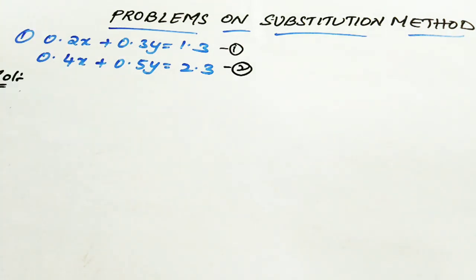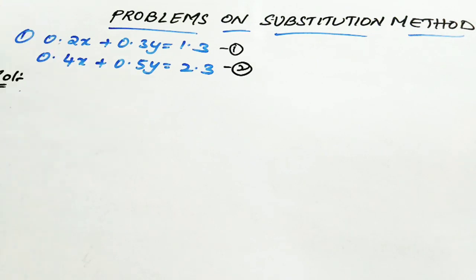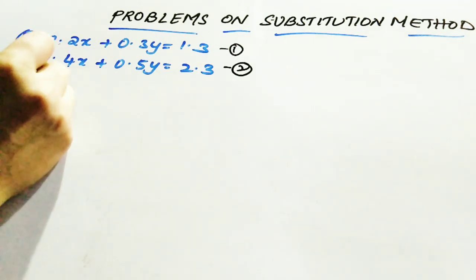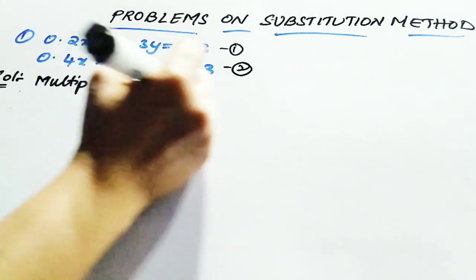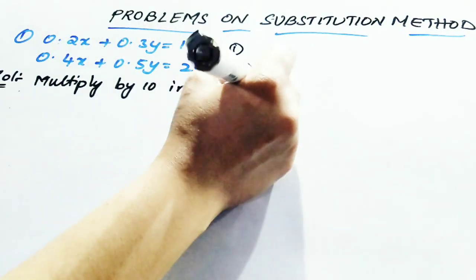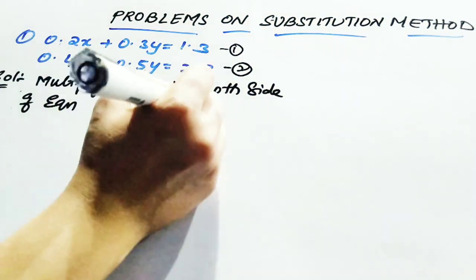Here you are seeing that the values are in decimal form, so it will be a little bit complicated to solve. Better to remove the decimal values. Since there is one place value after the decimal, you can multiply your equations by 10 to remove the decimal values. Multiply by 10 on both sides of equations 1 and 2.